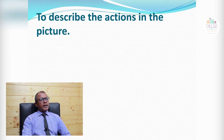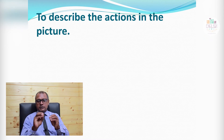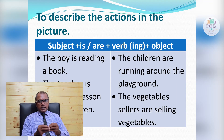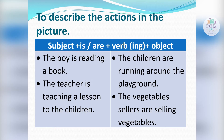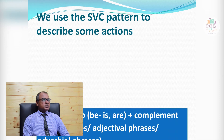To describe the actions in the picture, we look at the various actions we can see. Your teacher may ask: 'What can you see in the picture?' or 'What are they doing?' We use the present progressive tense — also called the continuous tense. The structure is: subject + is/are (helping verb) + verb + -ing (present participle) + object. For example: 'The boy is reading a book in the picture', 'The teacher is teaching a lesson to the children', 'The children are running around the playground', 'The vegetable sellers are selling vegetables.'